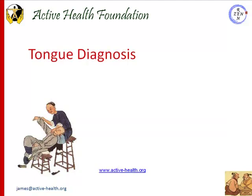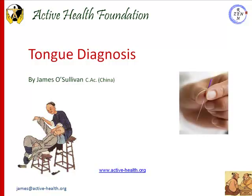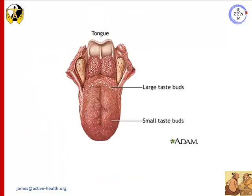Hi and welcome, my name is James O'Sullivan and welcome to this lecture on tongue diagnosis. First of all, let's take a look at the tongue. It's mainly composed of muscles, covered by a mucous membrane. There are small nodules of tissue called papulae, which cover the upper surface of the tongue. Between these papulae you have the taste buds, which provide our sense of taste. In addition to taste, the tongue also functions in moving food around the mouth to aid chewing and swallowing.